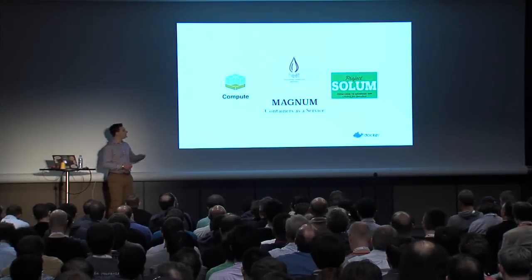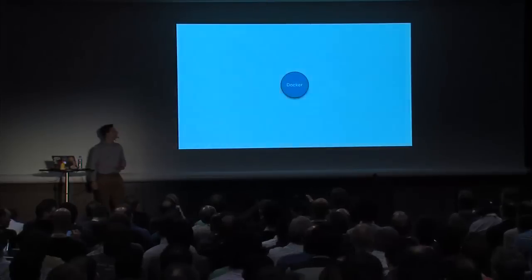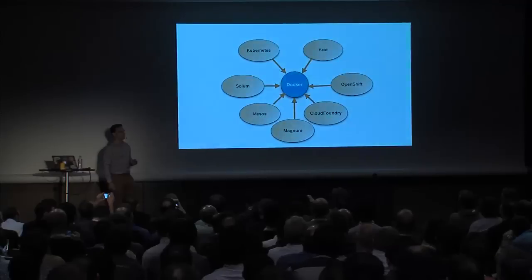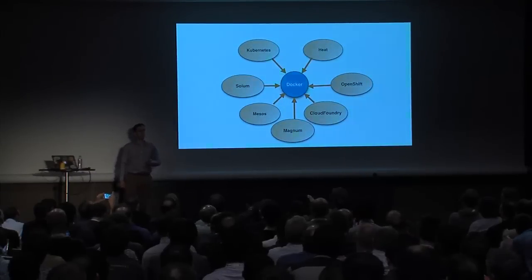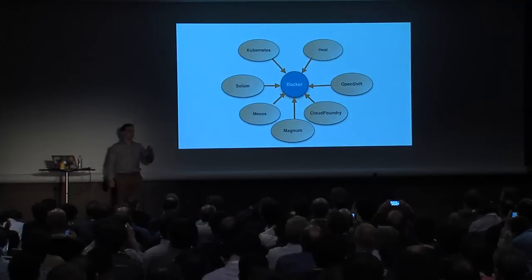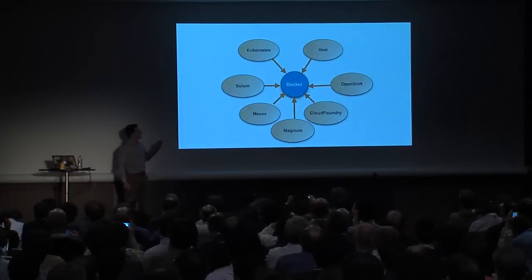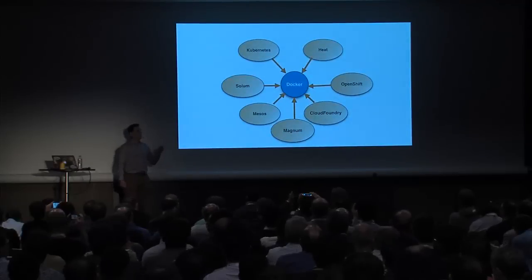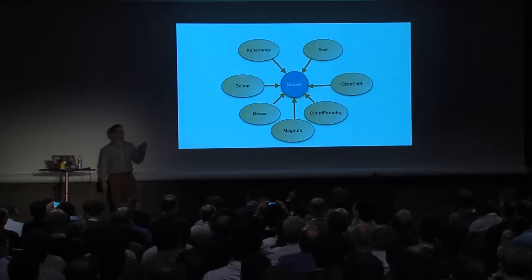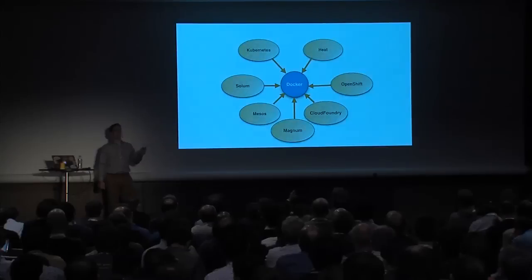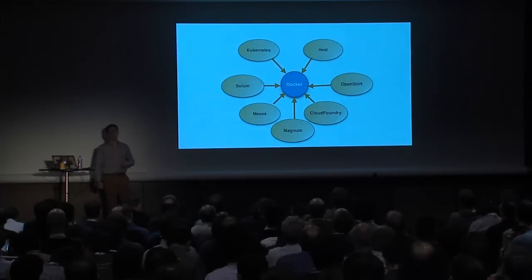The four up here are Nova Compute. We have Kubernetes, Heat, Solum, OpenShift, Mesos, Cloud Foundry, and Magnum — all tools that are able to orchestrate and use containers. Magnum is still very early stages, but the other ones you could in theory use today. The idea is that we can bring up an environment with OpenStack where these tools can now use and communicate with Docker and orchestrate it.